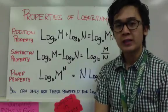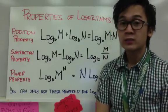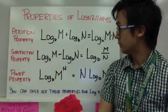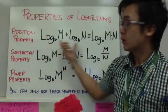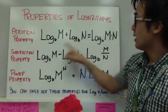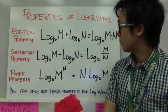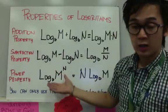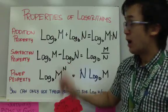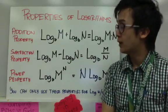Let's use the properties of logarithms to solve logarithmic equations. We have three logarithmic properties: the addition property, subtraction property, and power property. The addition property: if we have two logarithms and we're adding them, we can simplify it as the logarithm of m times n, as long as the base is the same. The properties are self-explanatory — you can only use them if the bases are the same. Otherwise, you cannot use the properties.